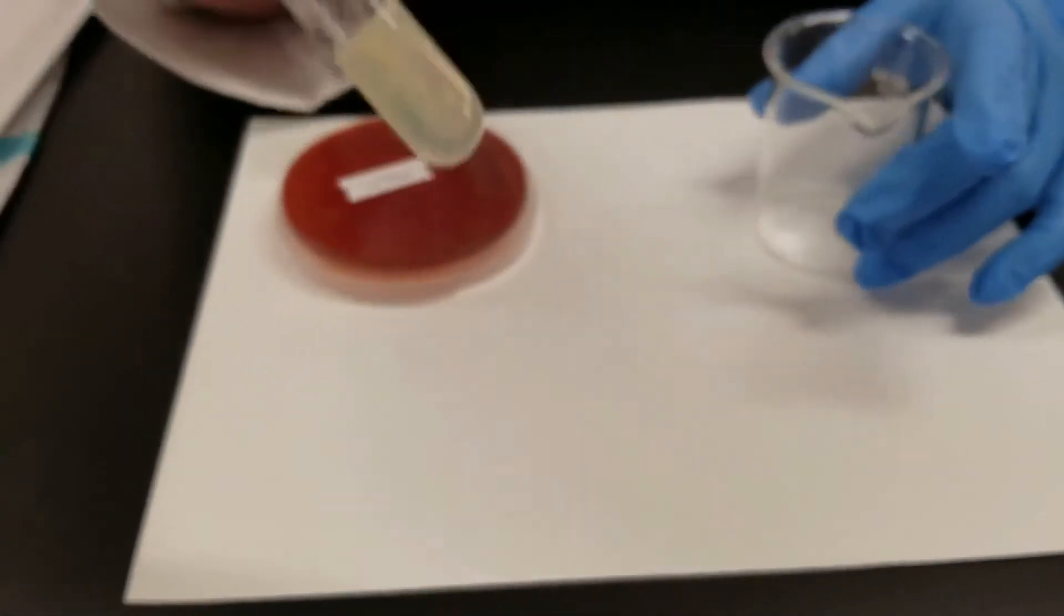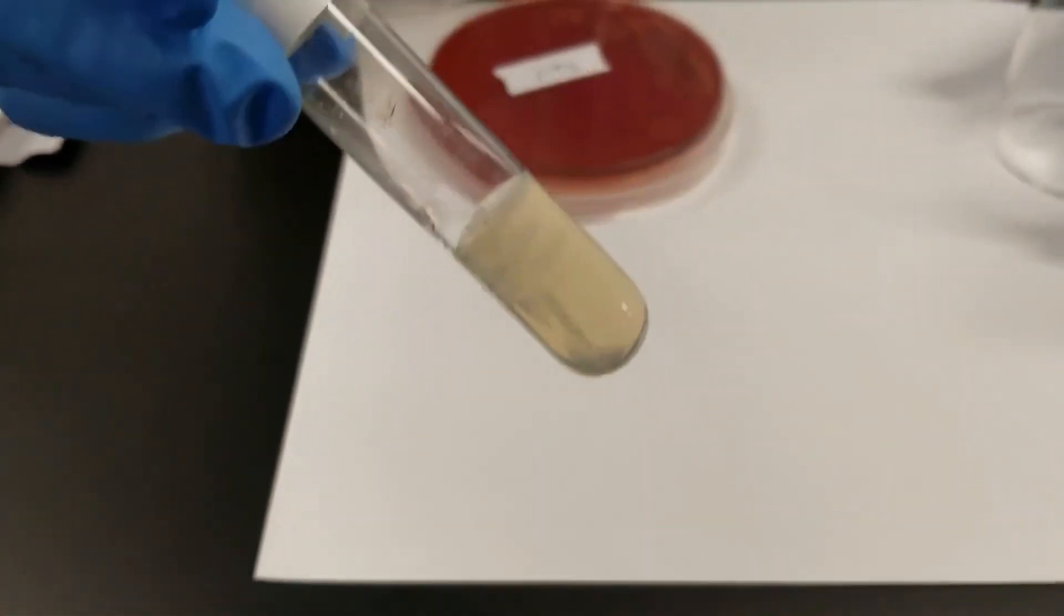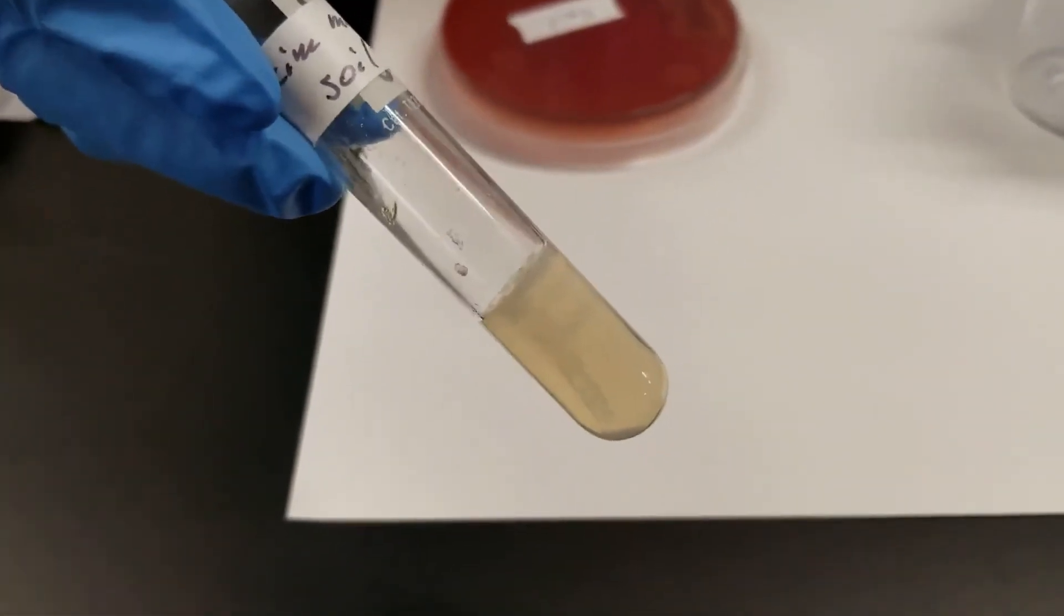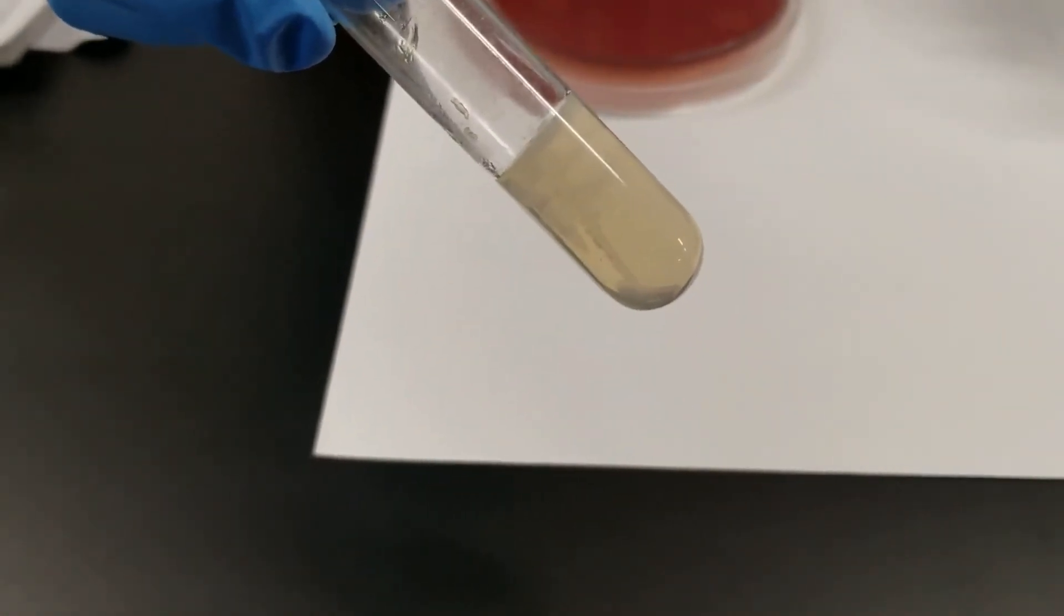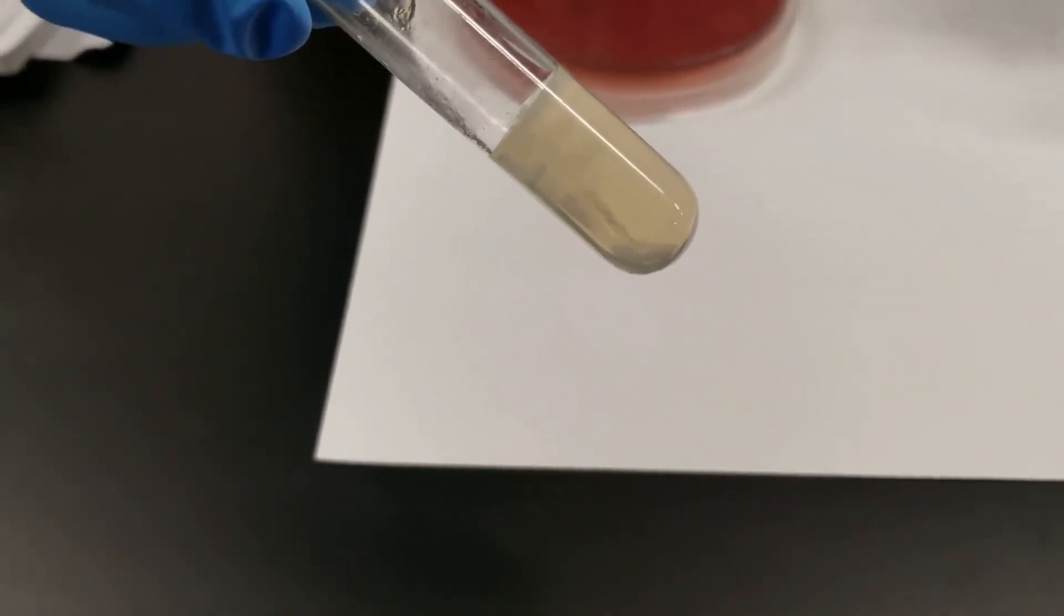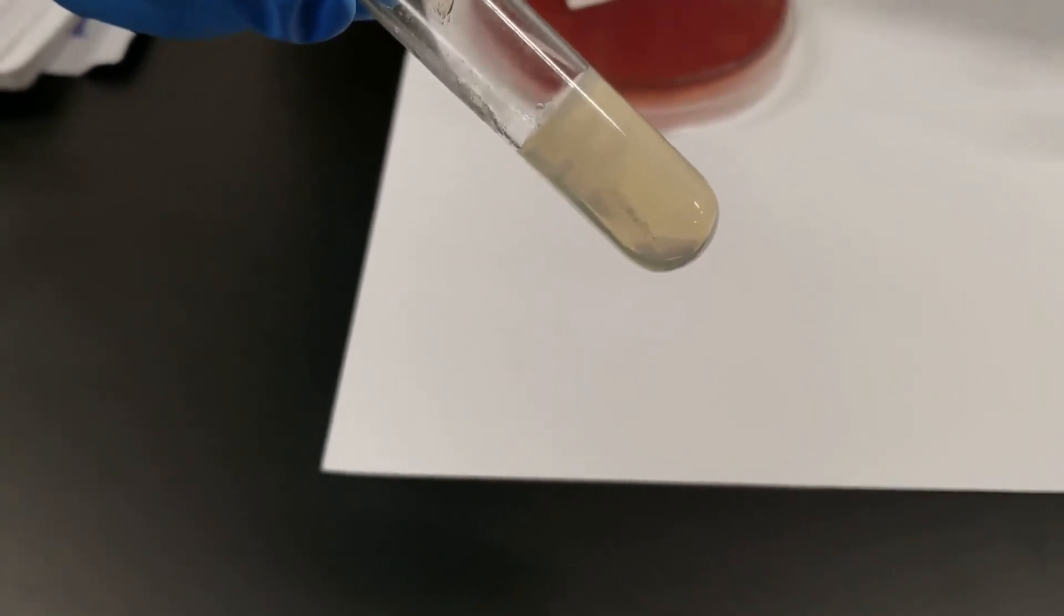And then the next tube, the third tube, is skim milk media. Once again, looking for growth. We do have growth in there. The cloudiness does indicate that. Growth is mostly along the upper half of the tube where the stab was done.